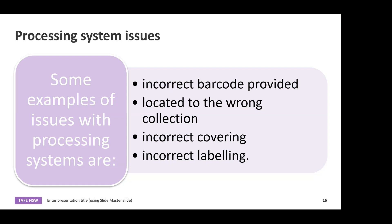There are some issues that come up with processing systems. When processing items in a library, sometimes the incorrect barcode is provided, or the item has been located to the wrong collection — maybe it went to the wrong trolley in sorting. Sometimes there's incorrect covering or incorrect labeling. We need to be aware that those issues do exist in processing books.